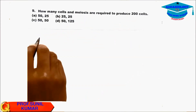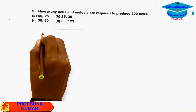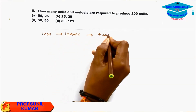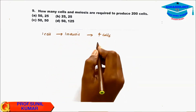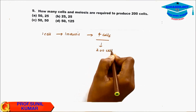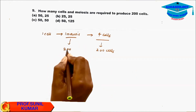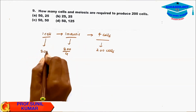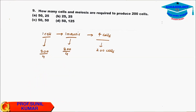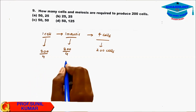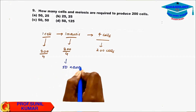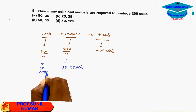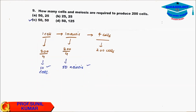Question 9: How many cells and meioses are required to form 200 cells? One meiosis gives rise to 4 cells. To get 200 cells, we need 200 ÷ 4 = 50 meioses and 50 cells. The answer is 50 meioses from 50 cells.